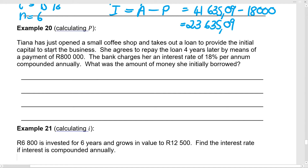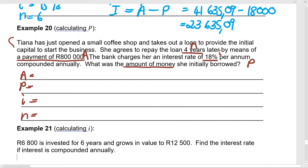Tiana has just opened a small coffee shop and takes out a loan for the initial capital. We're not told how much she borrows. She agrees to repay the loan after four years — so n is 4 — by means of a payment of R800,000. That R800,000 is what she pays back: the amount borrowed plus interest, so that's the A value. The bank charges an interest rate — that's our i value — and we want to know the amount she originally borrowed, which is P.